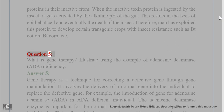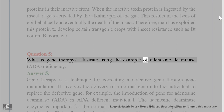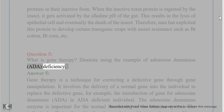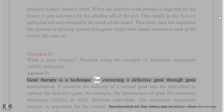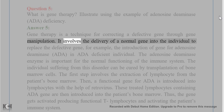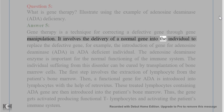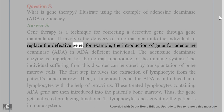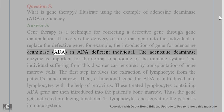Question 5. What is gene therapy? Illustrate using the example of adenosine deaminase (ADA) deficiency. Answer 5. Gene therapy is a technique for correcting a defective gene through gene manipulation. It involves the delivery of a normal gene into the individual to replace the defective gene. For example, the introduction of gene for adenosine deaminase (ADA) in ADA-deficient individuals.